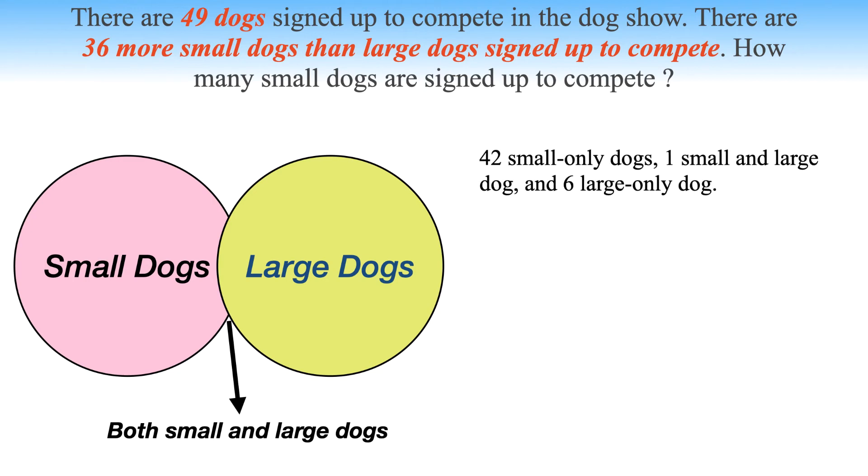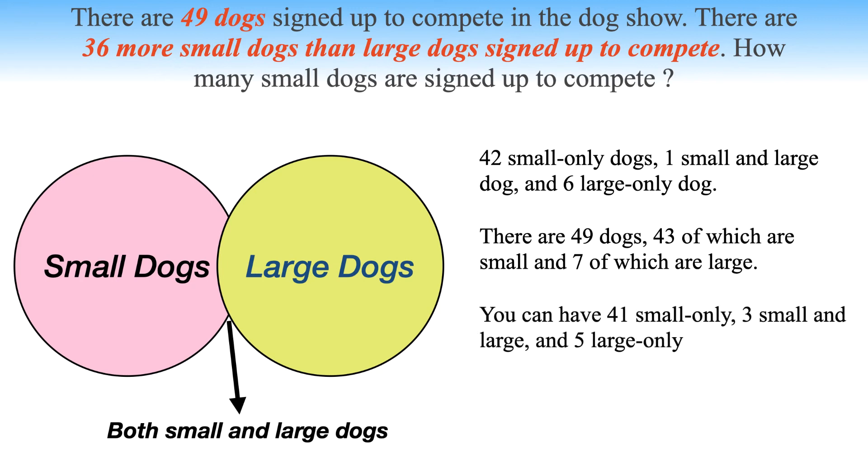42 small-only dogs, 1 small and large dog, and 6 large-only dogs satisfies the problem. There are 49 dogs, 43 of which are small and 7 of which are large, satisfying the constraints. Similarly, you can have 41 small-only, 3 small and large, and 5 large-only, and so on up to 37 small-only, 11 small and large, and 1 large-only.